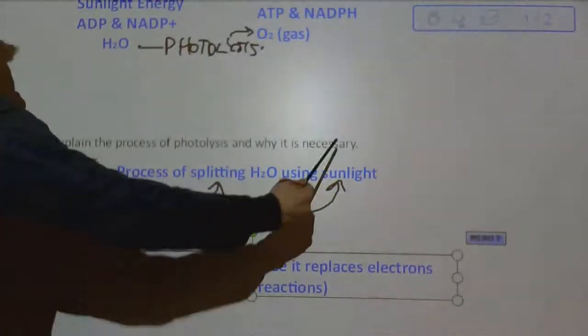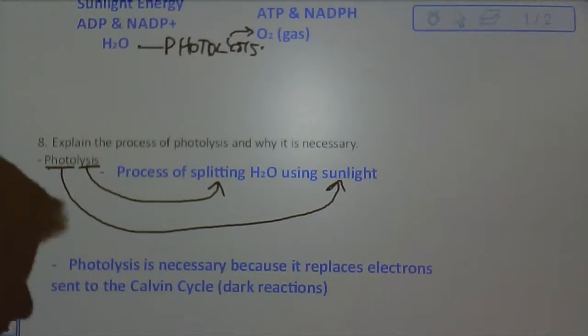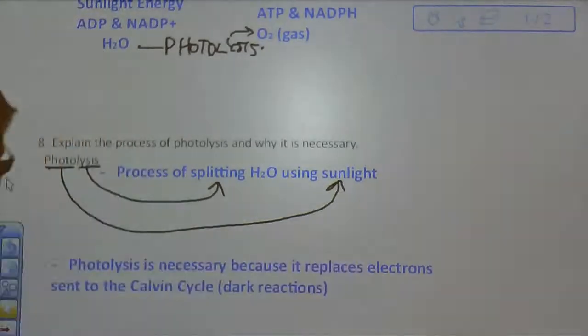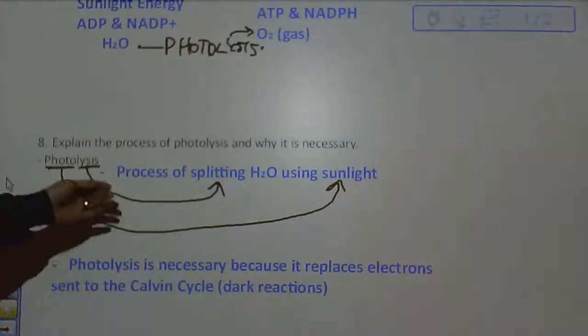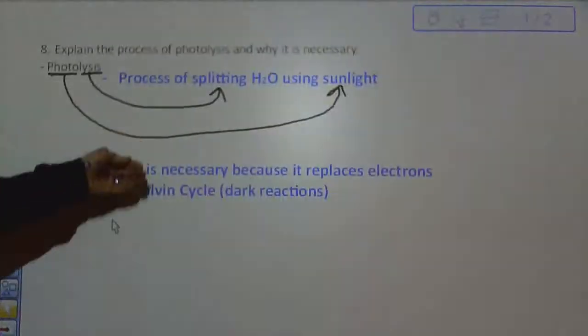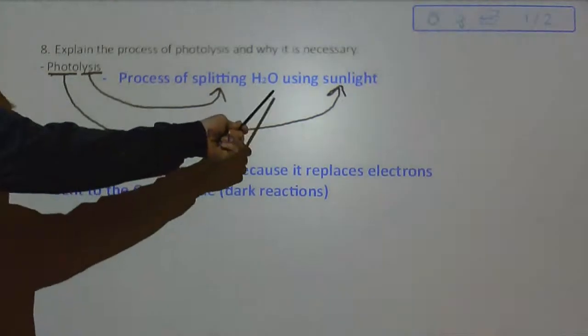Why it is necessary for photolysis to take place is because of the electrons that need to be replaced. And you'll see this when we go through the light reactions. The electrons that are going from the light reactions to the dark reactions being carried by this molecule right here, NADPH, have to be replaced once they leave the light reactions. And that's why water is split. It's taking the electrons that are holding those hydrogens to that oxygen.